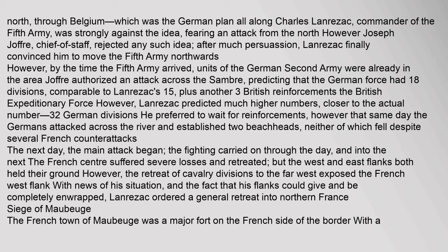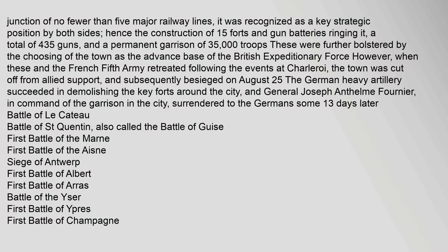Siege of Mabouge: The French town of Mabouge was a major fort on the French side of the border, with a junction of no fewer than five major railway lines. It was recognized as a key strategic position by both sides, hence the construction of 15 forts and gun batteries ringing it — a total of 435 guns — and a permanent garrison of 35,000 troops. When these and the French Fifth Army retreated following the events at Charleroi, the town was cut off from Allied support and subsequently besieged on August 25. The German heavy artillery succeeded in demolishing the key forts around the city, and General Joseph Anthelme Fournier, in command of the garrison, surrendered to the Germans some thirteen days later.